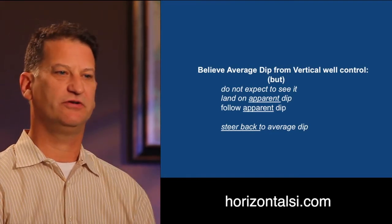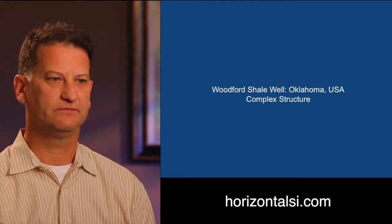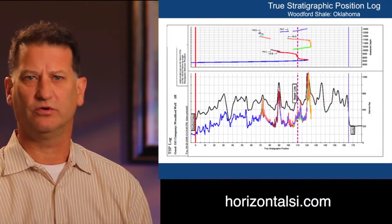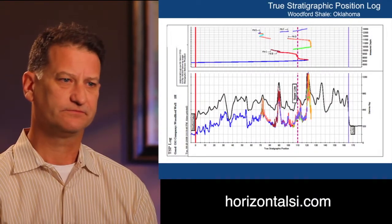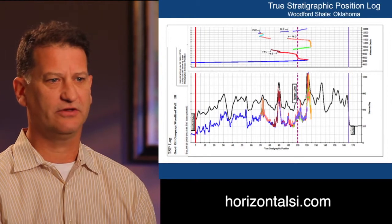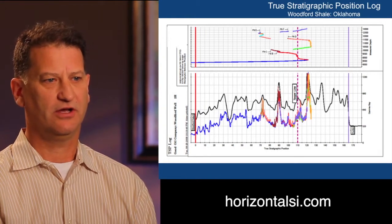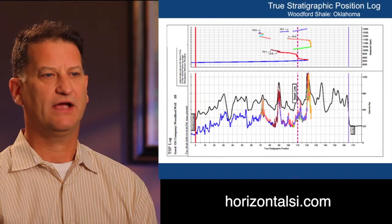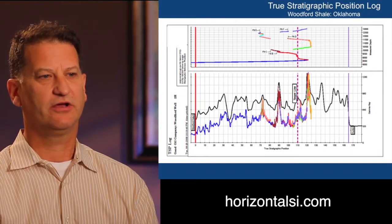Let me show you a chart to explain how this works. Here's a very complex reservoir in the Woodford Shale in Oklahoma. From looking at the TSP plot, the wellbore went down through section, back up through section in red, cut a fault.